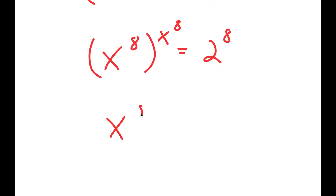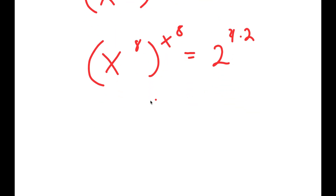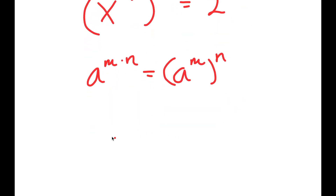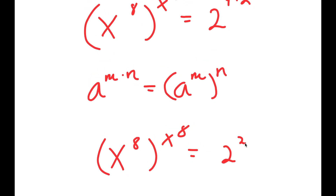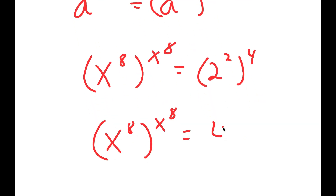Now I can rewrite 2 to the power of 8 as 2 to the power of 4 times 2. Using the rule that a to the power of m times n equals a to the power of m to the power of n, this turns into x to the power of 8 to the power of x to the power of 8, equal to 2 squared to the power of 4, meaning equal to 4 to the power of 4.